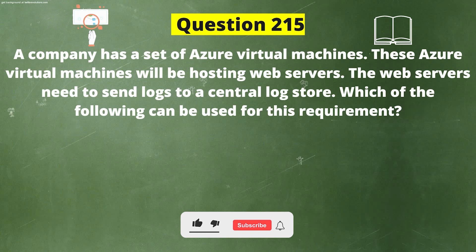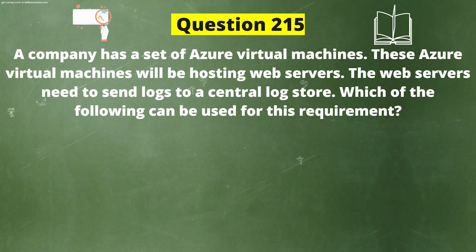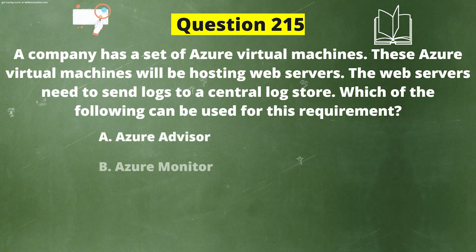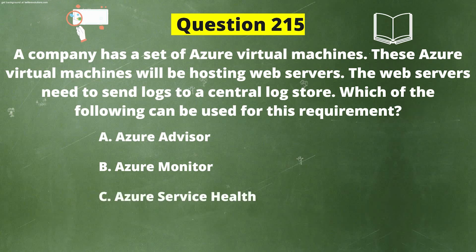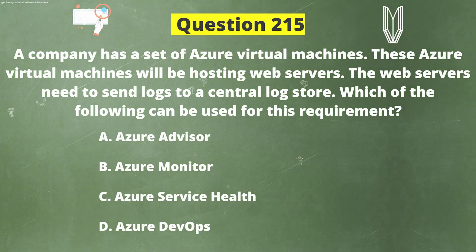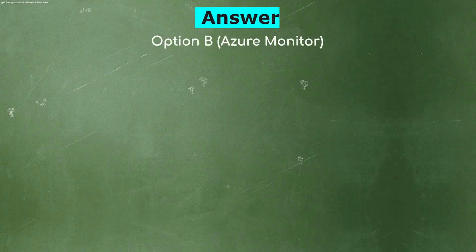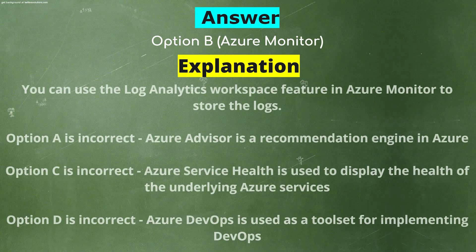Next question: A company has Azure virtual machines hosting web servers. The web servers need to send logs to a central log store. Which of the following can be used? Option A: Azure Advisor. Option B: Azure Monitor. Option C: Azure Service Health. Option D: Azure DevOps. The correct answer is Option B, Azure Monitor. You can use the Log Analytics workspace feature in Azure Monitor to store logs. Azure Advisor is a recommendation engine; Azure Service Health displays the health of underlying Azure services; Azure DevOps is a toolset for implementing DevOps.